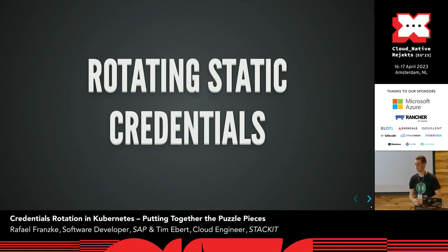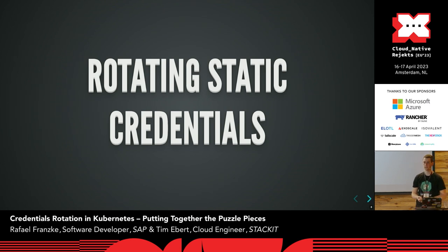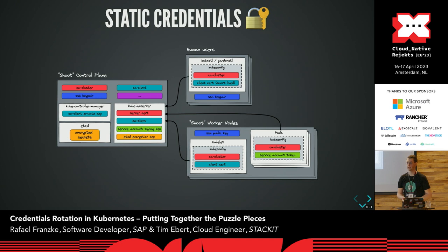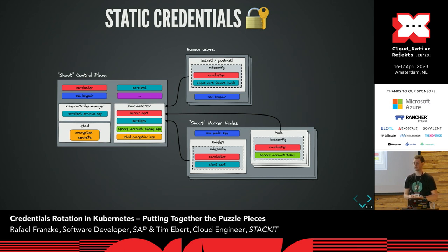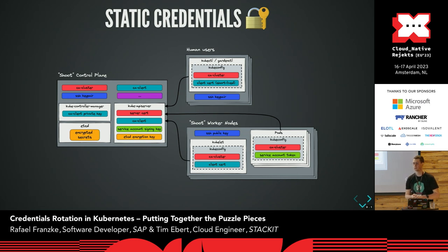Now that we know how to use short-lived credentials in Kubernetes with projected service account tokens, let's take a look at the other part — static credentials and how we rotate them. In every Kubernetes cluster, there are several static credentials involved. Most importantly, there's the cluster CA used to sign the serving certificate of the API server, and there's also a client CA used to sign client certificates for the kubelets to authenticate against the API server. These CAs are typically valid for quite a long time — in Gardener it's 10 years, in GKE it's even 30 years.